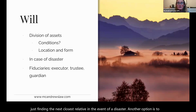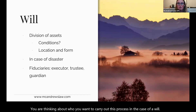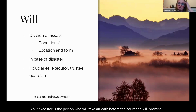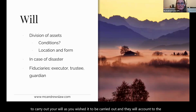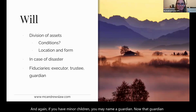Finally, you are thinking about who you want to carry out this process. Your executor is the person who will take an oath before the court and promise to carry out your will as you wished, accounting to the court to show your wishes were carried out. You may also name a trustee to manage funds left for a loved one with conditions, such as for minor children. And if you have minor children, you may name a guardian — the court will generally honor that appointment if listed in your will.